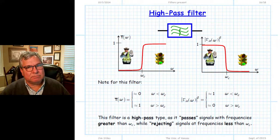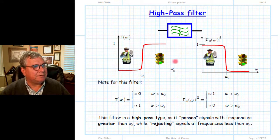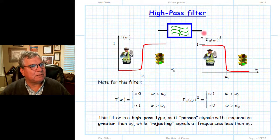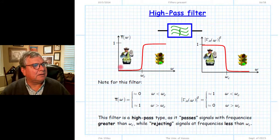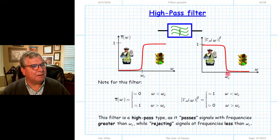The high-pass filter is the opposite of the low-pass filter. The pass band now extends from the cutoff frequency ωc — the half-power frequency — all the way theoretically toward infinity. In that pass band, T is approximately one and |Γin|² is approximately zero, so none of the incident power is reflected and all of it passes through and is absorbed by the matched load. In the stop band, for frequencies between zero and ωc, the transmission is zero because |Γin|² equals one and all incident power is reflected.